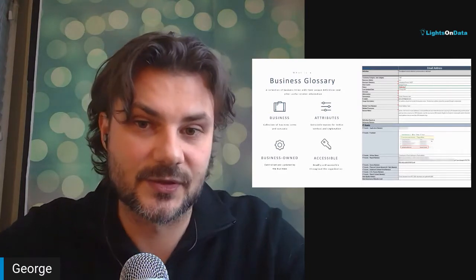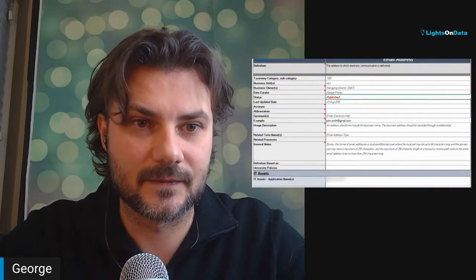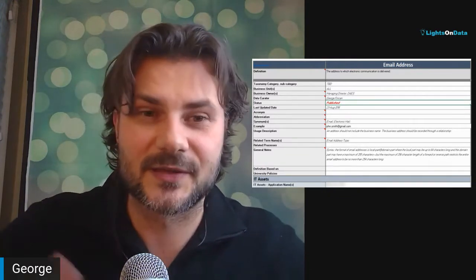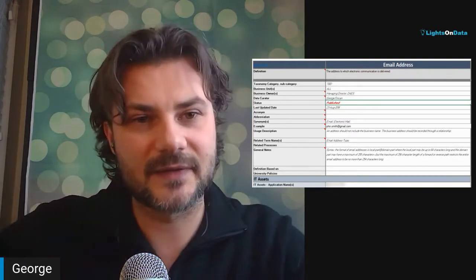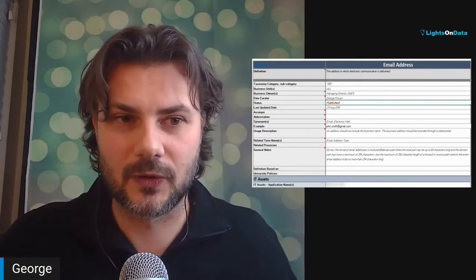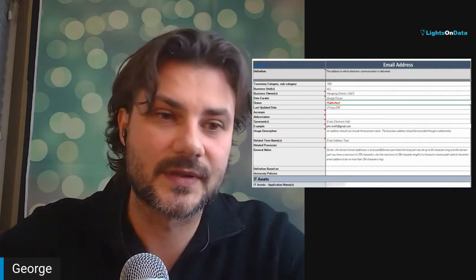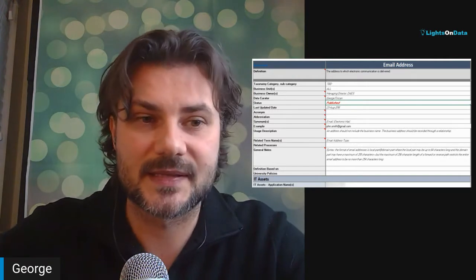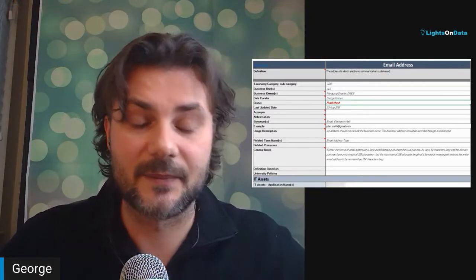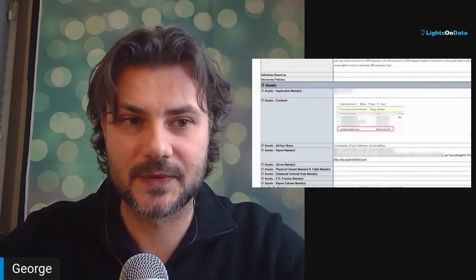A business glossary holds definitions of business concepts and its related semantics, its ontology, its meaning. It's comprised of terms and related information. Let me zoom in here a little bit. We're looking at this term called email address, and we have the definition underneath, but then we have all these other attributes. They can vary in terms of number of attributes, but you can have things such as taxonomy, the business units that are responsible, the office responsible for it, ownership, data curator, status, acronym, abbreviation, synonym, providing examples, usage descriptions, notes, policies, security standards that you want to relate to, and you could also hook it up to some IT assets as well.